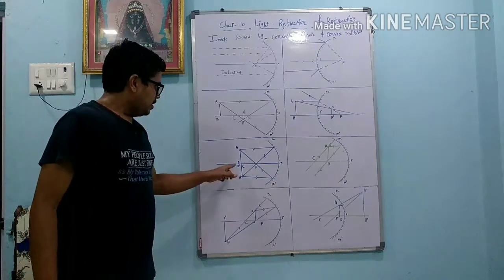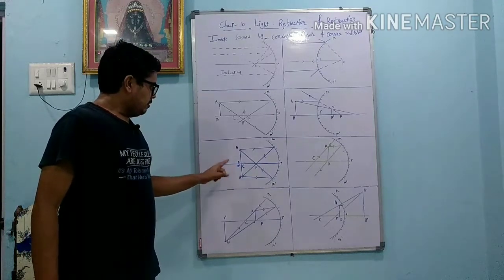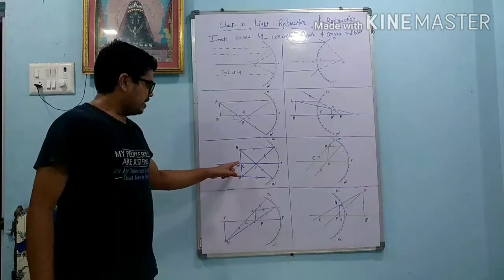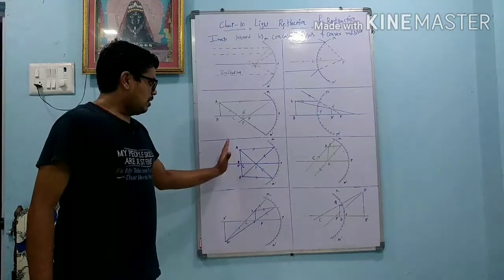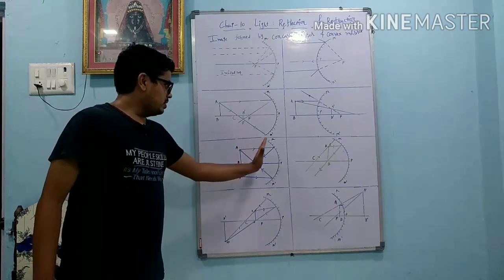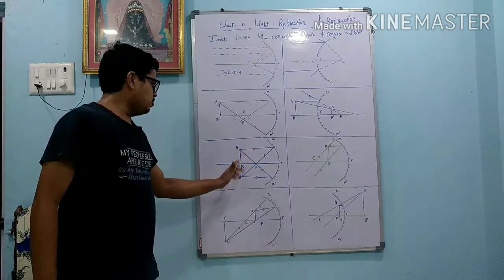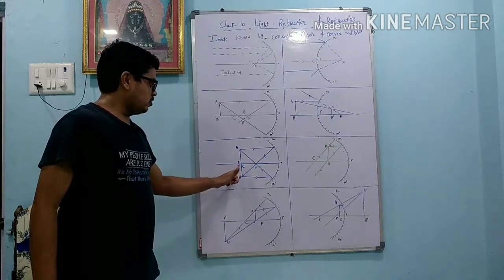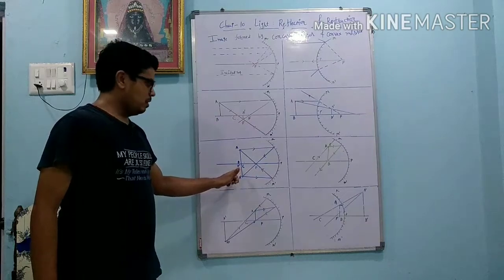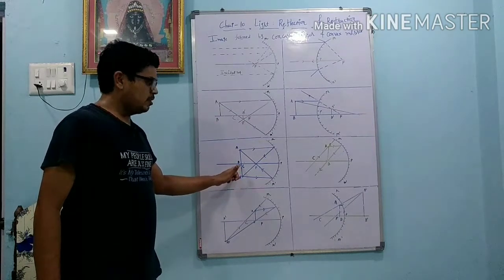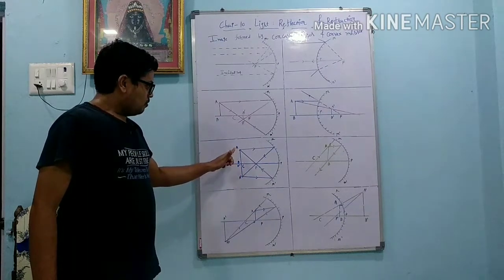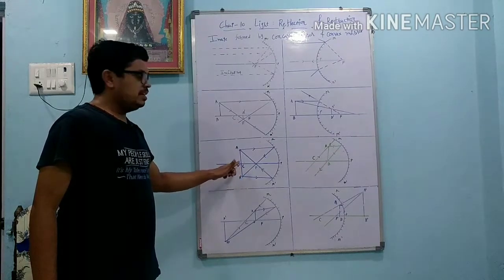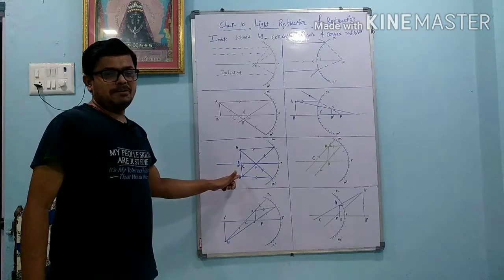Third condition: if we keep the object at the centre of curvature, then after reflection all the rays meet on the centre of curvature only. So the image is obtained on the centre of curvature. Object size and image size are the same, but it is real and inverted.